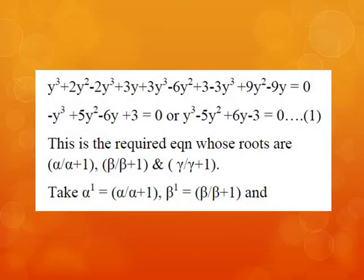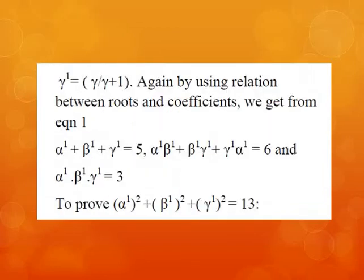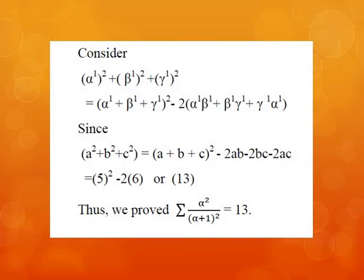For convenience, let α′ = α/(α+1), β′ = β/(β+1), and γ′ = γ/(γ+1). Using relations between roots and coefficients from equation 1, we get: sum of roots α′ + β′ + γ′ = 5, sum of products taken two at a time α′β′ + β′γ′ + γ′α′ = 6, and product of roots α′β′γ′ = 3. Now we prove that α′² + β′² + γ′² = 13.